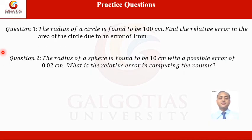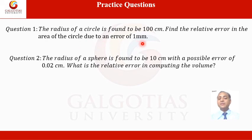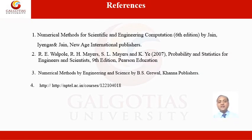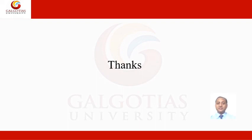Here are some practice questions based on the topic. Question 1: The radius of a circle is found to be 100 cm; find the relative error in the area due to an error of 1 mm. Question 2: The radius of a sphere is found to be 10 cm with a possible error of 0.02 cm; what is the relative error in computing the volume? For more study and practice, learners can refer to the mentioned references. Thank you very much for your patience. Have a great learning!